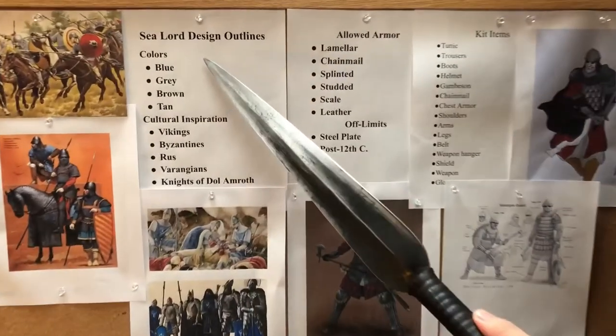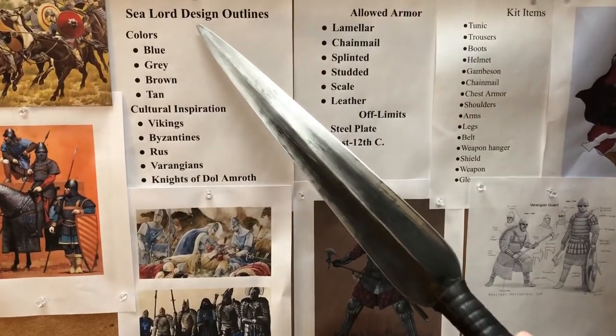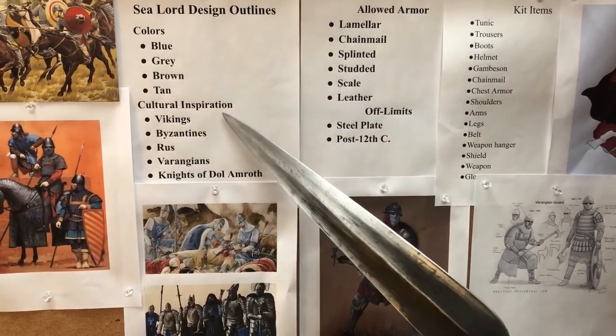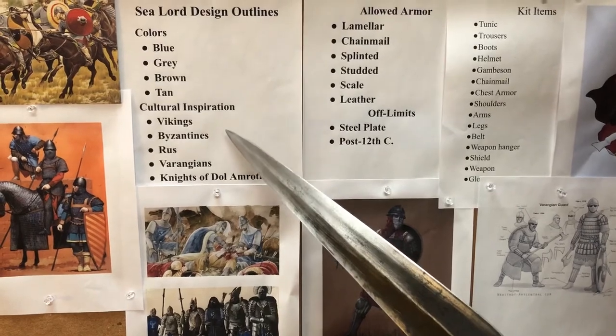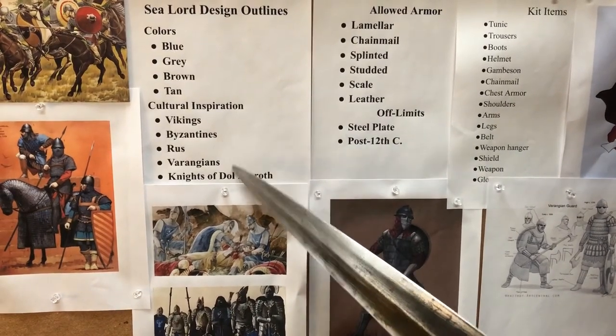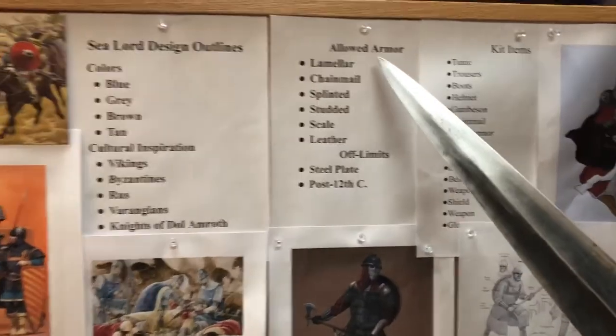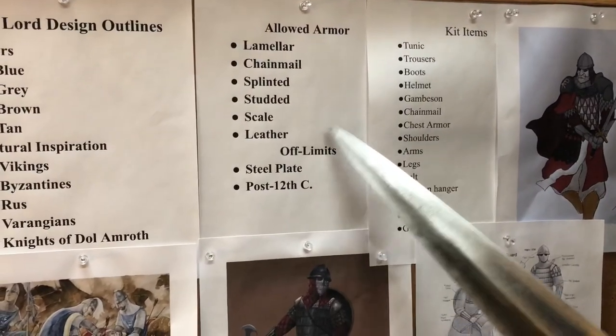Here we have our Sealord cultural design parameters. We have our color palette and we also have our historical cultural inspirations such as the Byzantines and the Varangians. We also have listed what we are allowed to choose armor-wise and what we are not allowed to choose. So while our event Weekend Warrior does take place in a fantasy world, we've actually created a kind of historical constraint about our different cultures, putting them all between the 7th and about the 13th century.